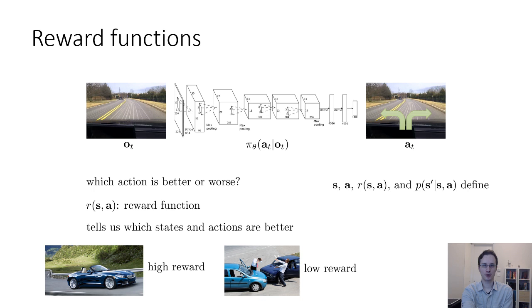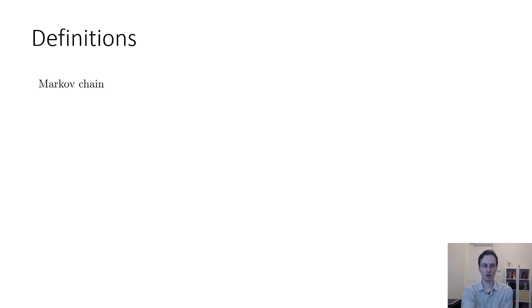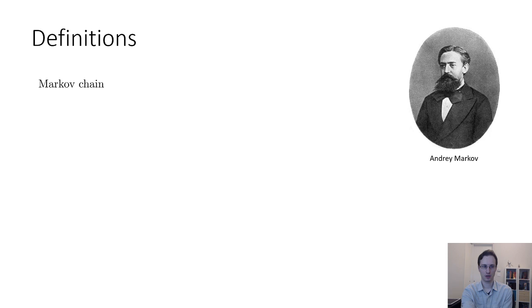Together, the state, the action, the reward, and the transition probabilities define what we call a Markov decision process — a decision process on a Markovian state. Let's build up towards a full formal definition of Markov decision processes, starting with something called a Markov chain. The Markov chain is named after Andrei Markov, a mathematician who pioneered the study of stochastic processes, including Markov chains.